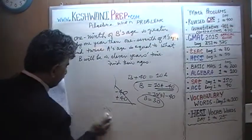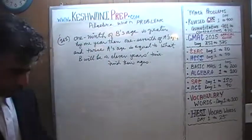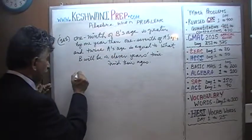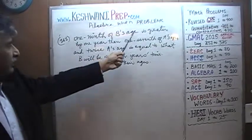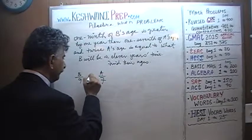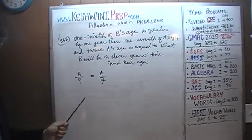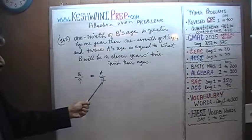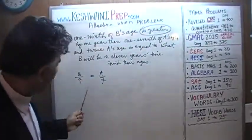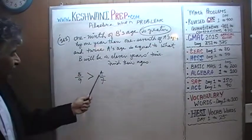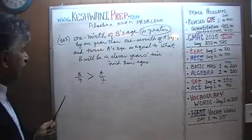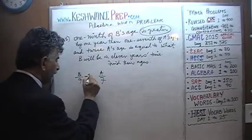Let's understand what they're talking about. One-ninth of B's age is B over 9. One-ninth of B's age is greater by one year than one-seventh of A's age, which is A over 7. The way we first wrote it says B over 9 equals A over 7 — but that's not what it says. It says B over 9 is greater than A over 7 by one year, so if we subtract 1 from B over 9, they should be equal. That's our first equation.